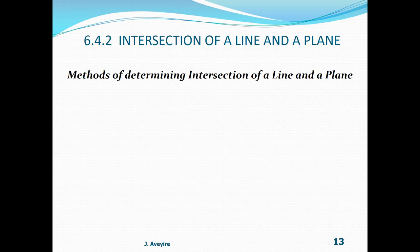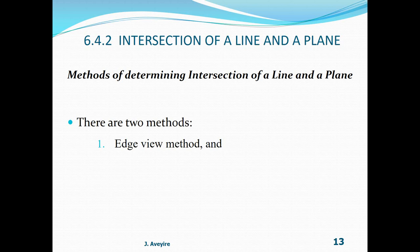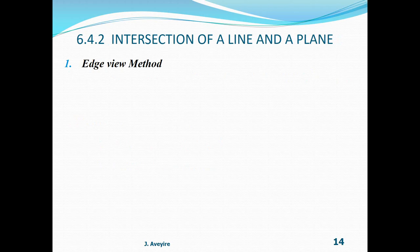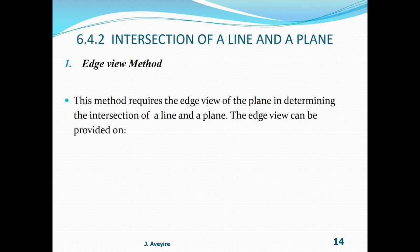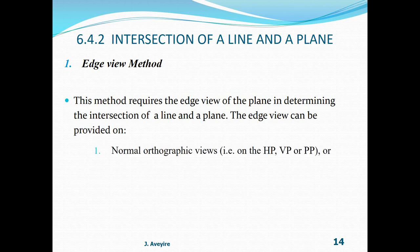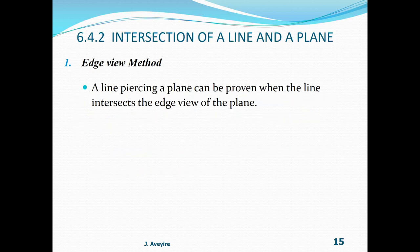Methods of determining the intersection of a line and a plane: there are two methods. One, the edge view method, and two, the cutting plane method. The edge view method requires the edge view of the plane in determining the intersection of a line in a plane. The edge view can be provided on normal orthographic views — that is on the HP, VP, or PP — or on auxiliary projection views.